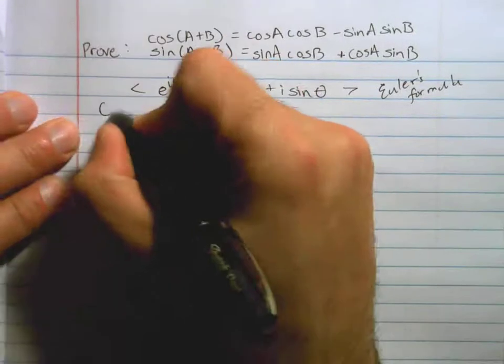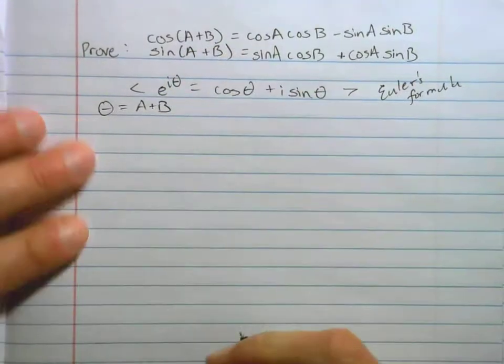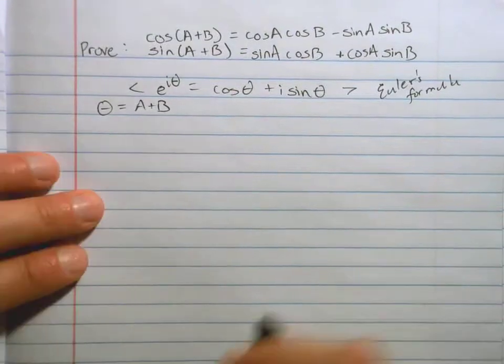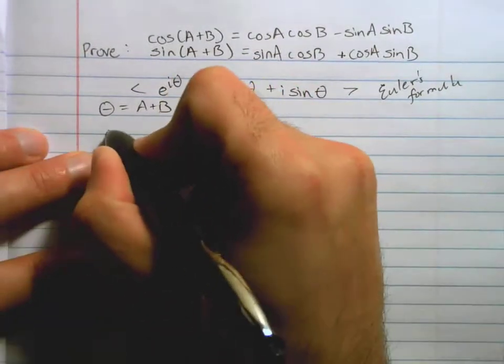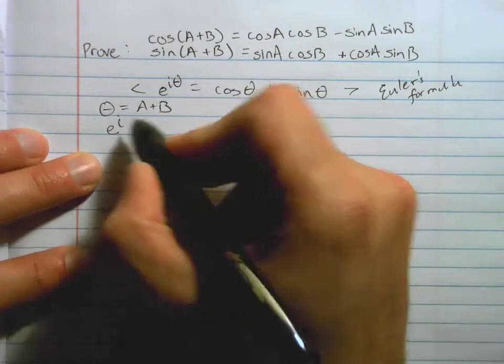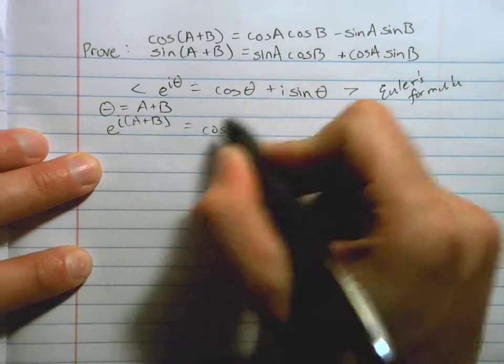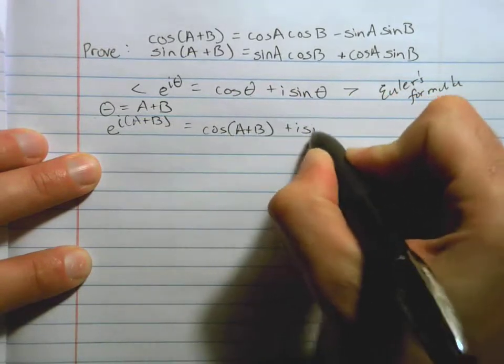I'm going to let theta equal a plus b. Theta is an angle. I can add two things together to get it. That's fine. So let's write that out. I have e to the i. Okay, instead of theta, I'm writing a plus b equals cosine. Instead of theta, a plus b plus i sine a plus b.